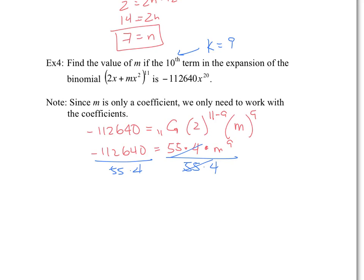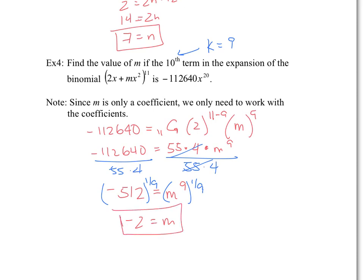What you get is negative 512 equals m to the power of 9. To solve for m, you take the ninth root on each side — that's the power of 1/9. It just so happens this is negative 2 to the power of 9, and you get a solution of m equals negative 2. So the coefficient is negative 2. Congratulations — you've completed the course by video. I hope you enjoyed it and we'll see each other in class to study for our final exam. Thank you.